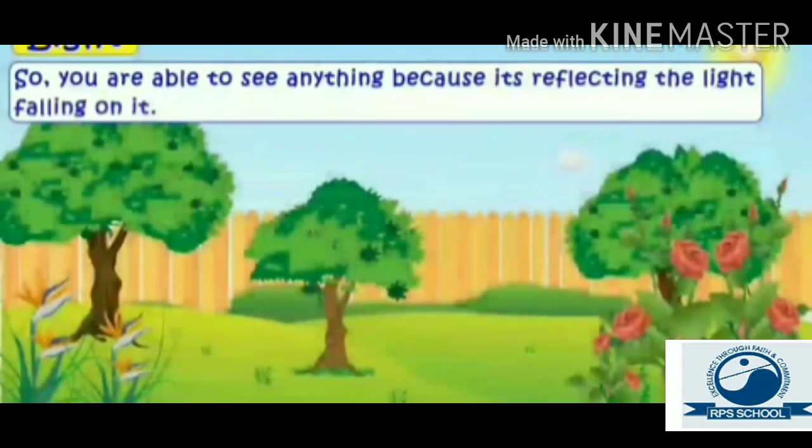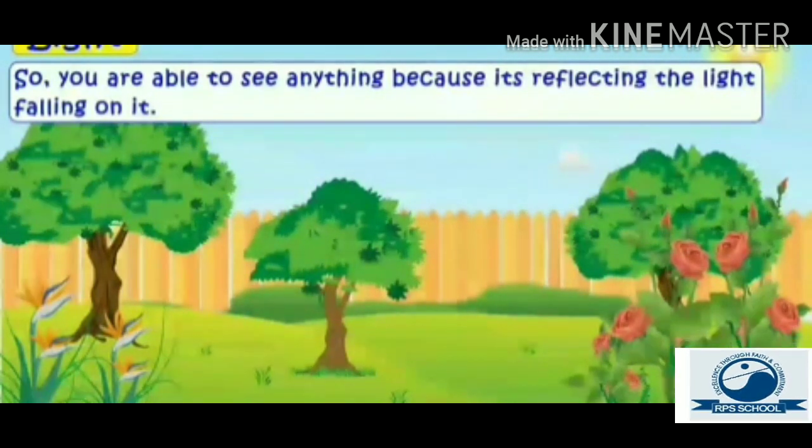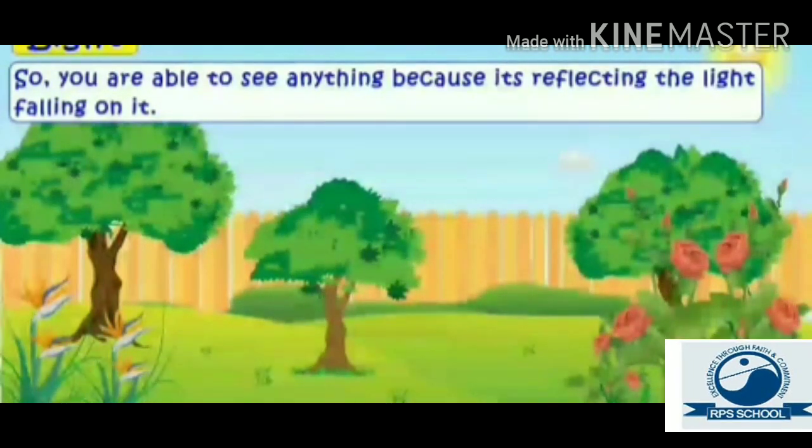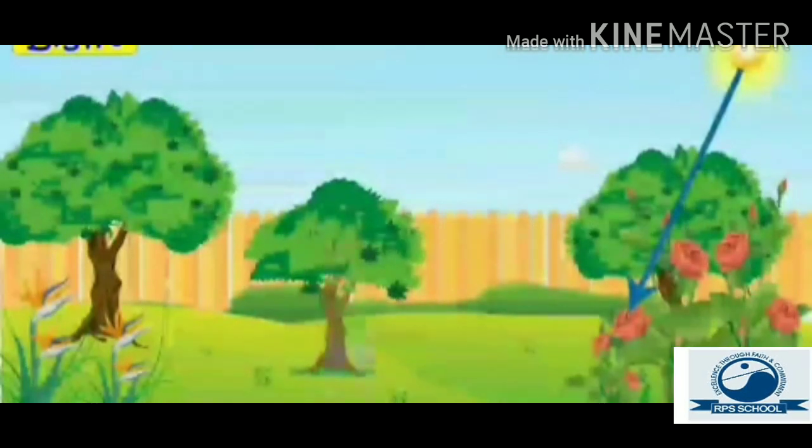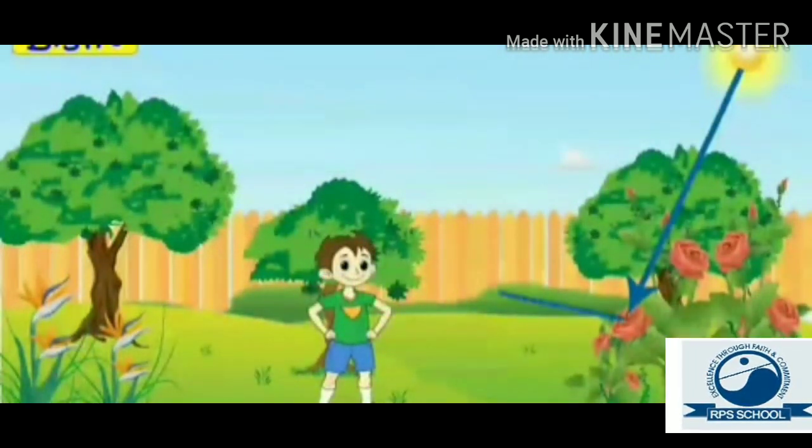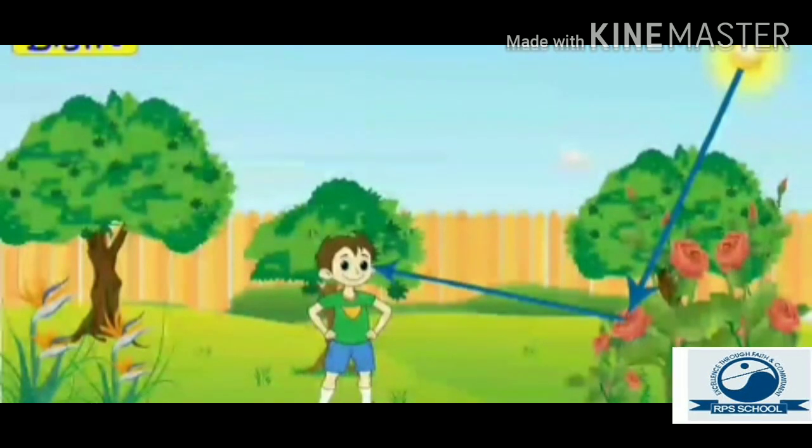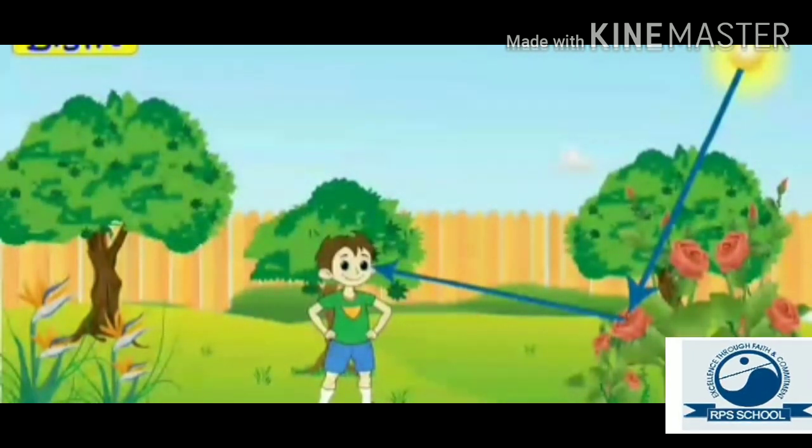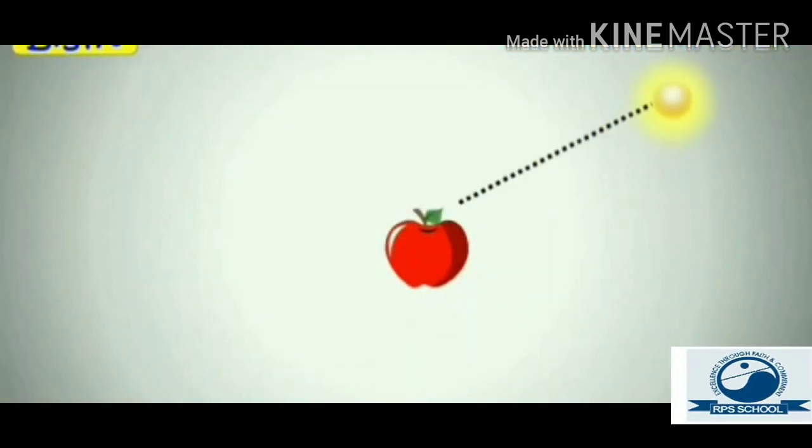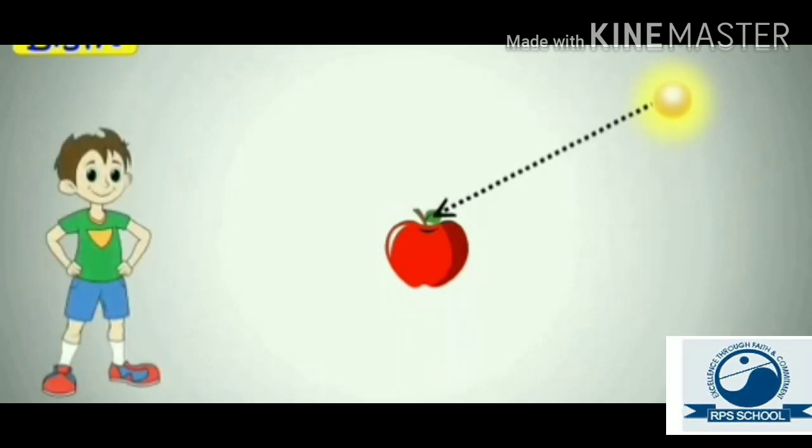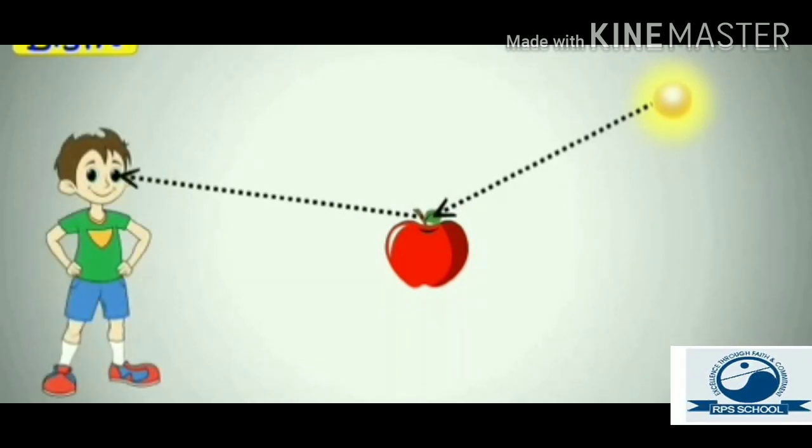So, you are able to see anything because it is reflecting the light falling on it. We can see this flower because the light from the sun is falling on it. And light is always reflected off the thing on which it falls. And my dear children, that reflected light from those objects makes us see that object. Here is an apple. You can see it because the light falling on it is getting reflected back into your eyes.